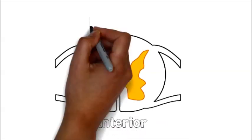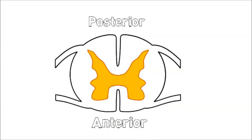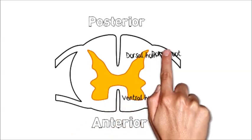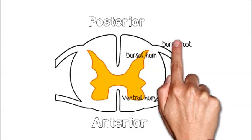Anterior is at the bottom of the diagram and posterior is at the top. Labeled is the ventral horn of the gray matter and the ventral root where motor axons leave the spinal cord, and the dorsal horn of the gray matter and the dorsal root where primary afferents enter the spinal cord.